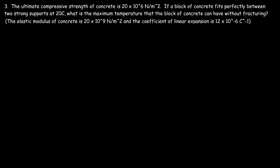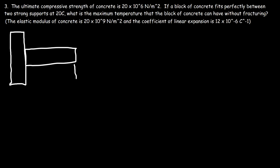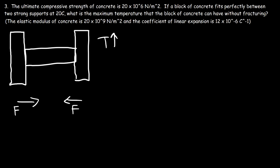Problem 3: the ultimate compressive strength of concrete is 20 times 10 to the 6 newtons per square meter. A block of concrete fits perfectly between two strong supports at 20 degrees Celsius. What is the maximum temperature the block can reach without fracturing? As we raise the temperature, the vertical supports will exert a compressive force, placing the material under thermal stress. If the temperature gets too high, the thermal stress will exceed the ultimate compressive strength of the concrete and it will fracture.